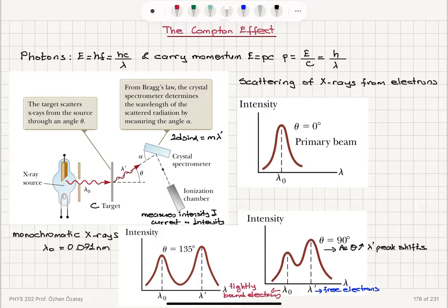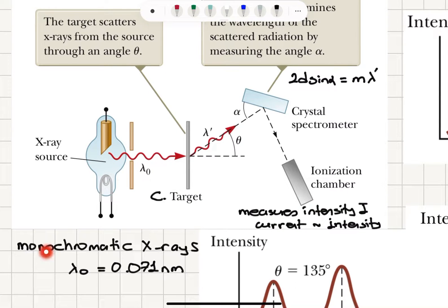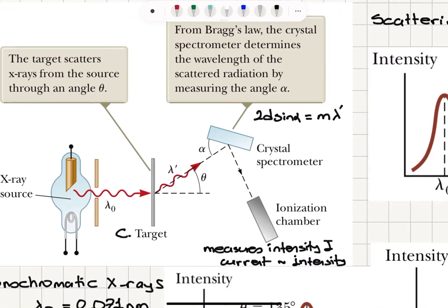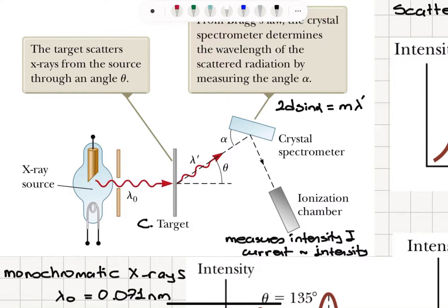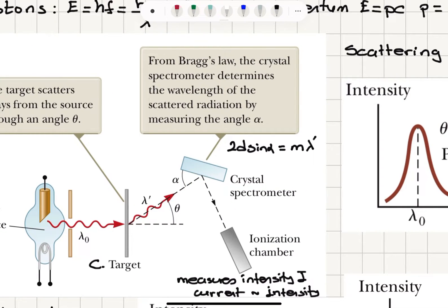How did Compton reach this conclusion? The experiment involves scattering of x-rays from electrons. We have an x-ray source that produces x-rays at a wavelength lambda zero — it's a monochromatic source with wavelength 0.071 nanometers. These rays are collimated by passing through a slit and are incident on a carbon target. We then observe the scattered x-rays at an angle theta with respect to the incoming wave propagation direction.